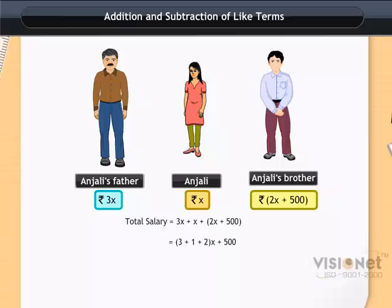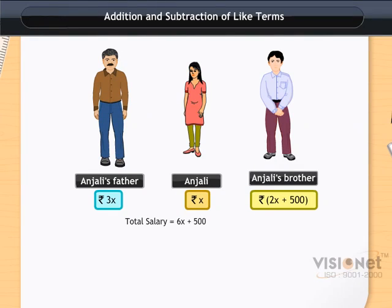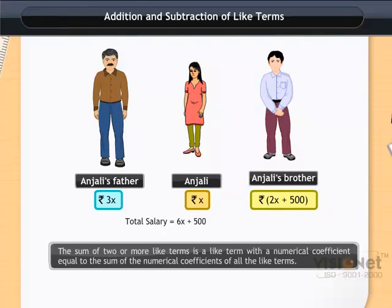We get 6x plus 500. So their total salary is 6x plus 500. Thus, the sum of 2 or more like terms is a like term with a numerical coefficient equal to the sum of the numerical coefficients of all the like terms.